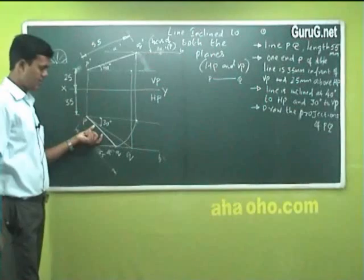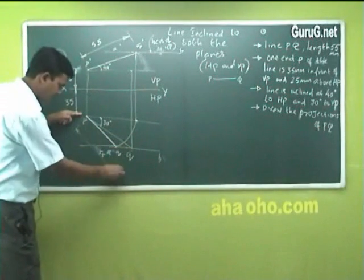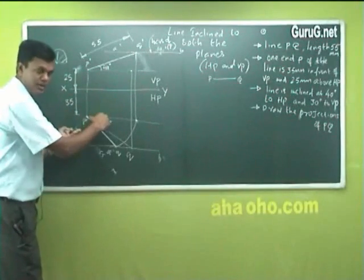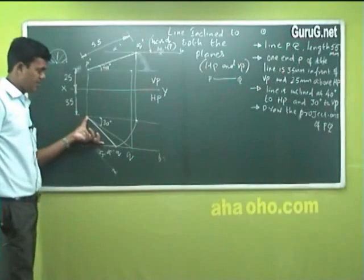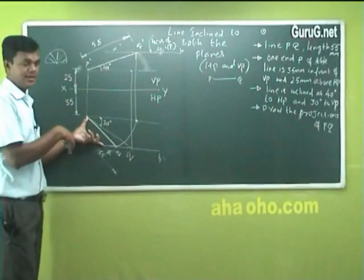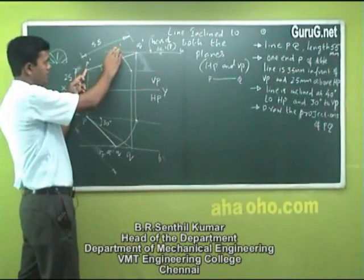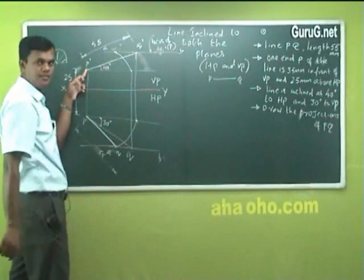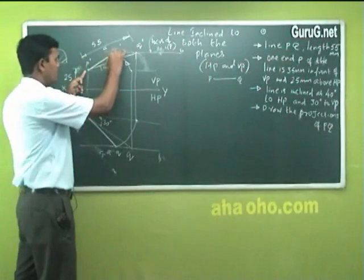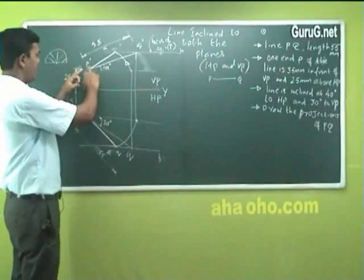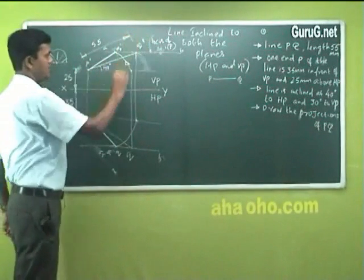This is the foreshortened length. The original 55 millimeter length — what you did was you took 30 degrees on the protractor, drew a straight line, cut by 55 millimeters. You have taken this line's foreshortened length. The original point would be Q, and I can write it as Q dash or Q double dash just for information.